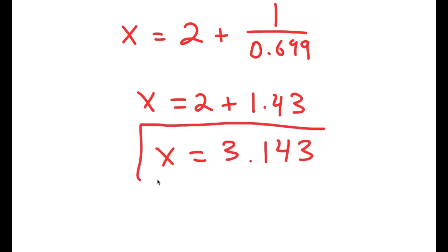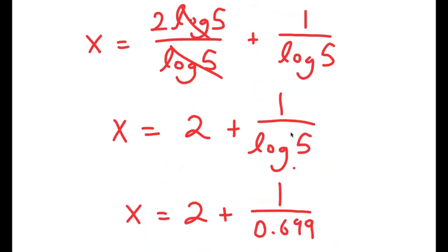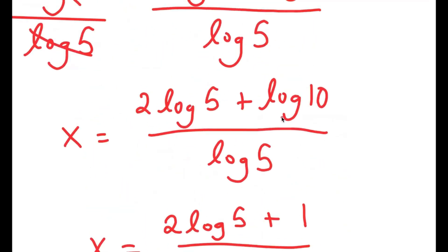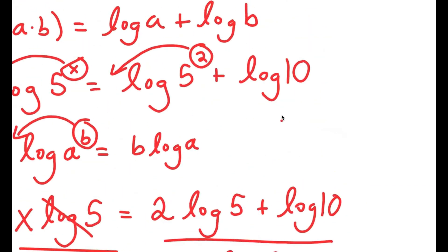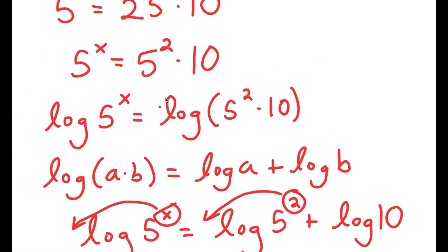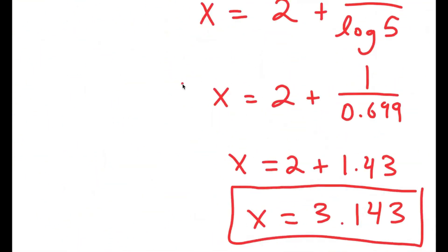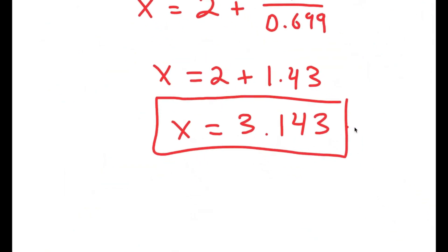So x is approximately equal to 3.43, and this is my answer to this problem. Remember how we already said that x was going to be somewhere in between 3 and 4 — so this proves us right.